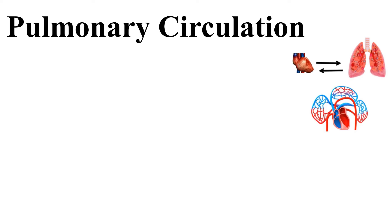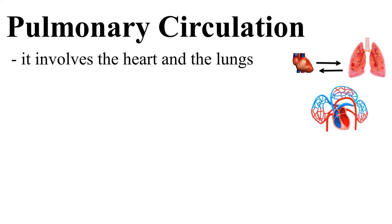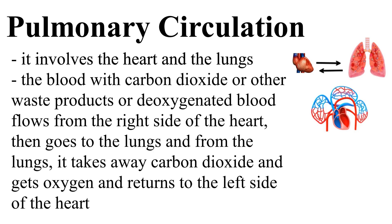Pulmonary circulation involves the heart and the lungs. Blood carrying carbon dioxide and other waste products — deoxygenated blood — flows from the right side of the heart, then goes to the lungs. From the lungs, it releases carbon dioxide, takes in oxygen, and returns to the left side of the heart.